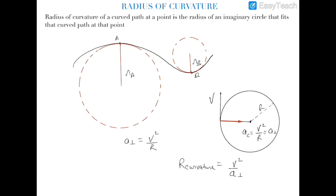In any curved path, even if the particle is not moving in a circle but in a curved path, there will also be an instantaneous acceleration directed perpendicular to the velocity. If the velocity is in one direction, the acceleration will be perpendicular to it, and this acceleration is also called the centripetal acceleration. So if you think centripetal acceleration is only valid for circular motion, you are wrong — in any curved motion, centripetal acceleration also acts towards the instantaneous center of that curve.